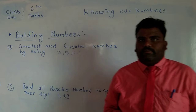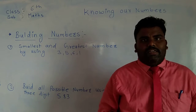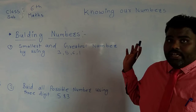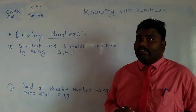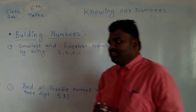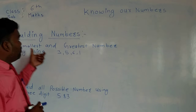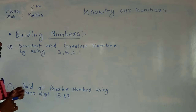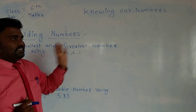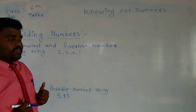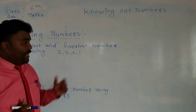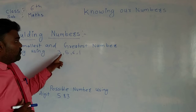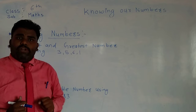Hello friends, welcome back. I hope you are all fine. Dear students, today we are going to talk about building numbers in 'Knowing Our Numbers.' Building numbers means we have to build numbers — for example, the smallest and greatest number. Suppose you get four numbers, and by using these four numbers, you have to write the smallest four-digit number and the greatest four-digit number. So how will you write it?